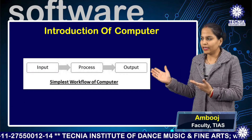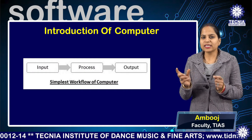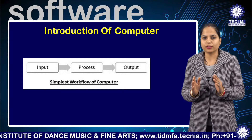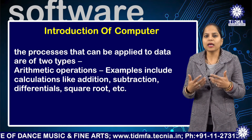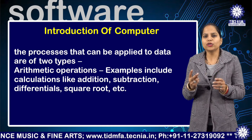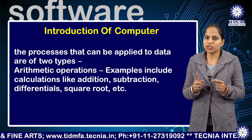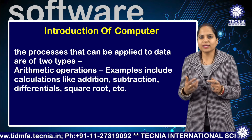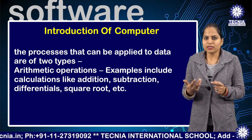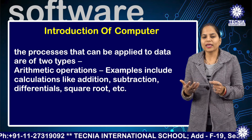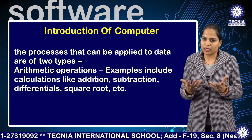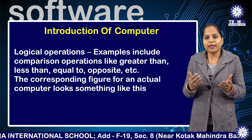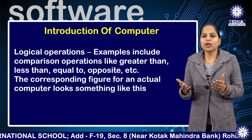You can see the diagram: input, processing, output. The combination of these three elements fully defines a computer. The processes that can be applied to data are of two types: arithmetic operations and logical operations. Arithmetic operations include calculations like addition, subtraction, square root, etc. Logical operations include comparison operations like greater than, less than, and equals to.